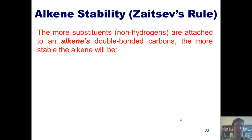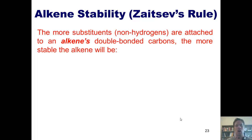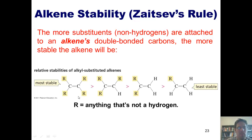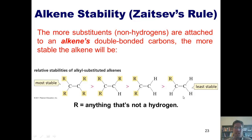This brings us to our final topic for this lecture: alkene stability. Similar to the way that tertiary carbocations are more stable than secondary carbocations, which are more stable than primary carbocations, the more substituents — non-hydrogens attached to an alkene's double-bonded carbons — the more stable that alkene will be. If all these R's represent anything that's not a hydrogen, the most stable alkene is the one in which each of the doubly-bonded carbons is bonded to the maximum amount of non-hydrogens. The second most stable has three substituents, followed by two, followed by one. One substituent is the least stable.